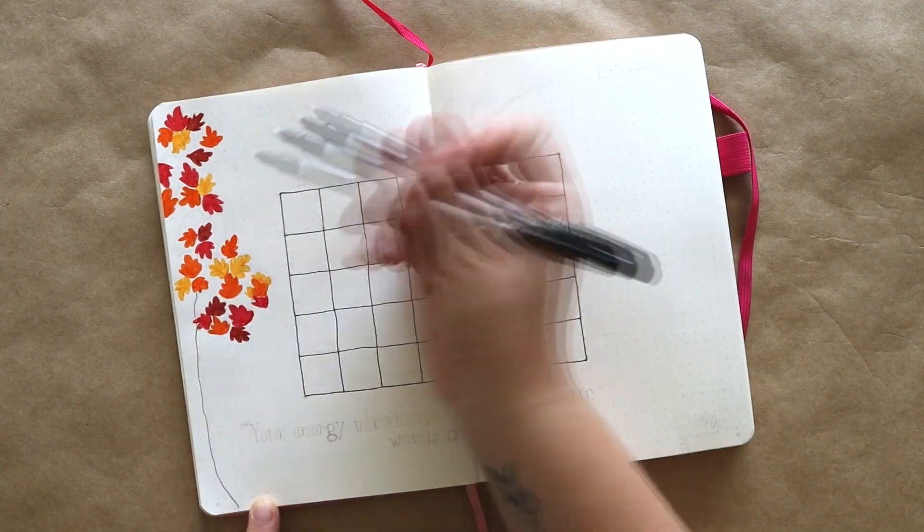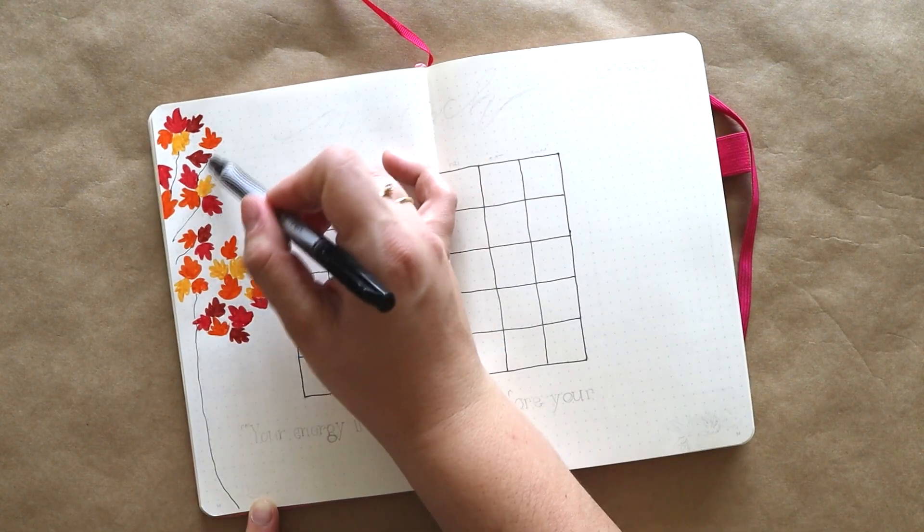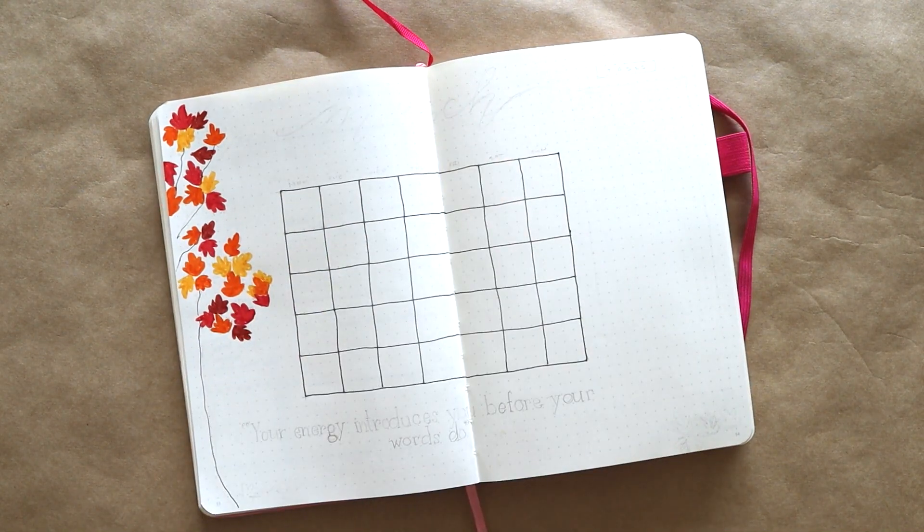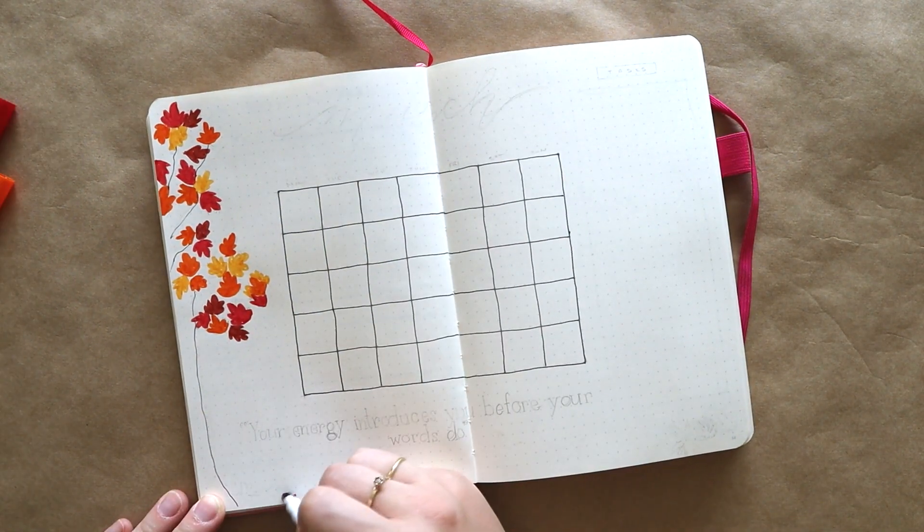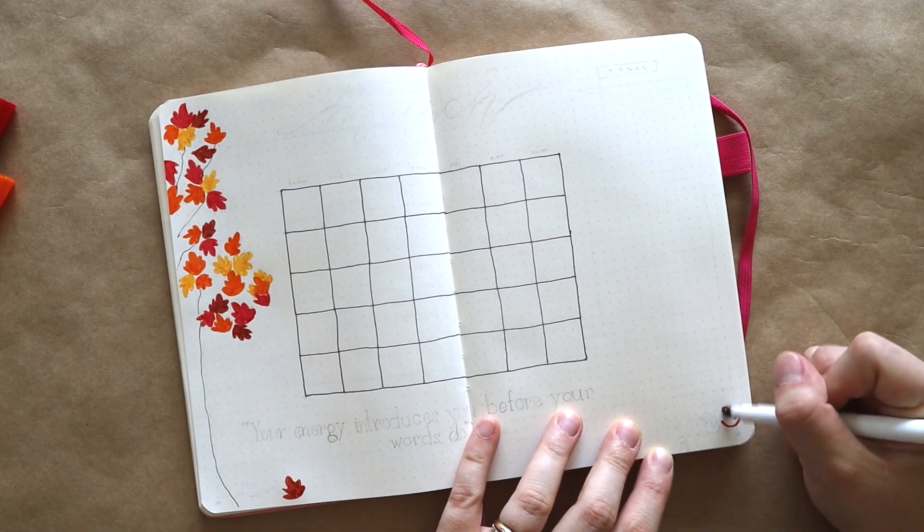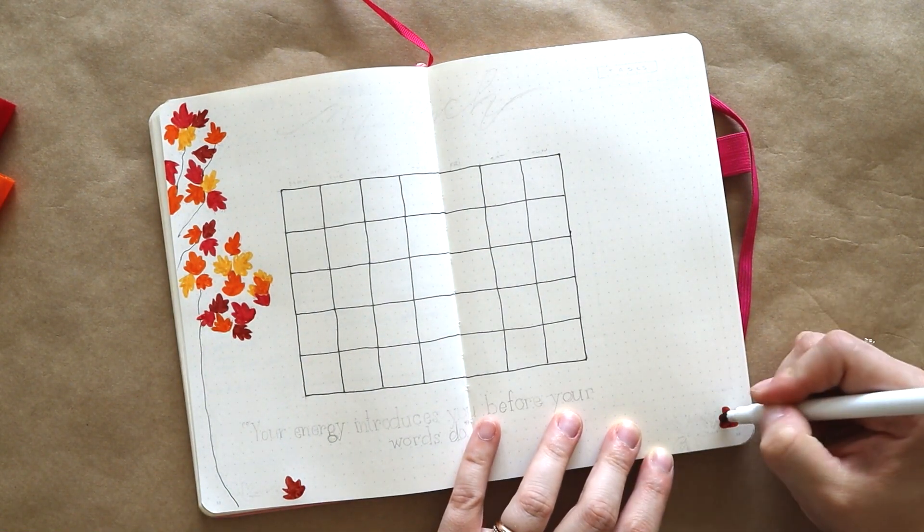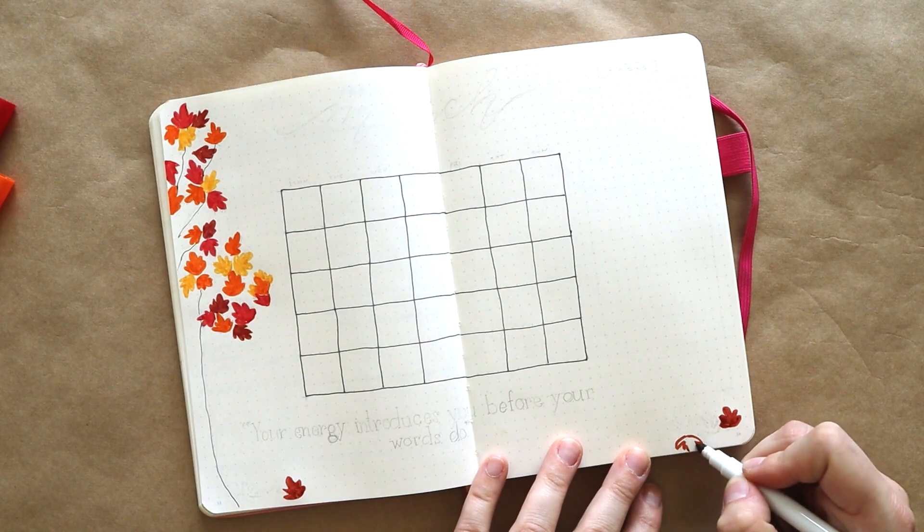I'm using my black fine tip marker just to suggest a trunk and some tree limbs, and then I'm adding some more leaves along the bottom for a little bit of variety to bring those pops of colors over onto the rest of the page a little bit.